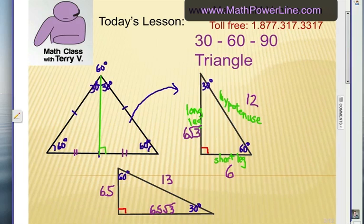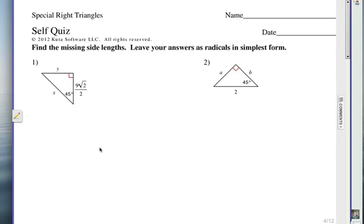Alright, let's try a couple of problems here at a time. Take a look at the measurement here, what kind of triangle it is, and you're going to be solving for X and Y on number 1, and A and B on number 2.